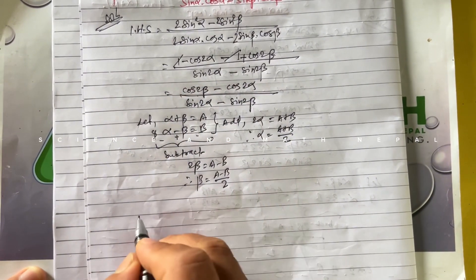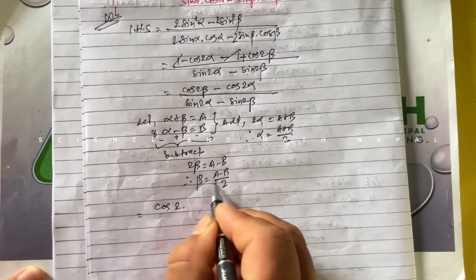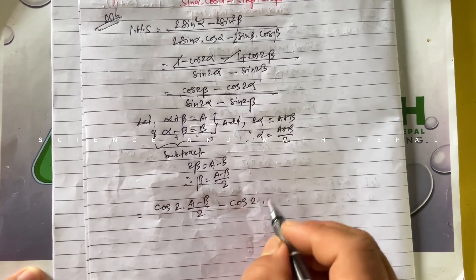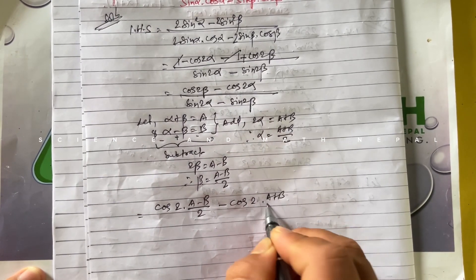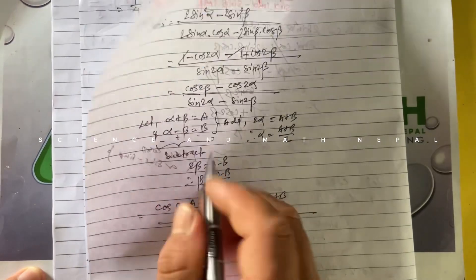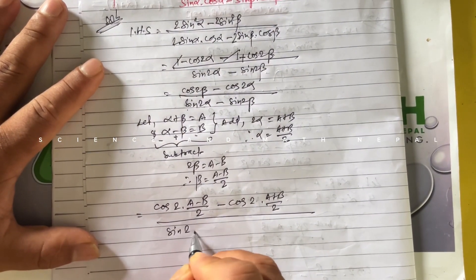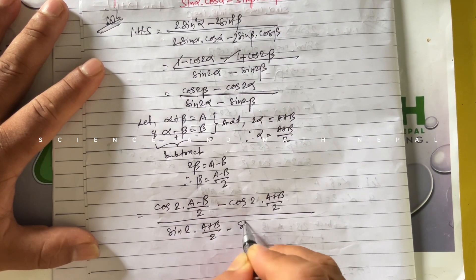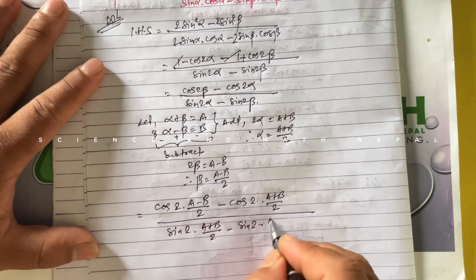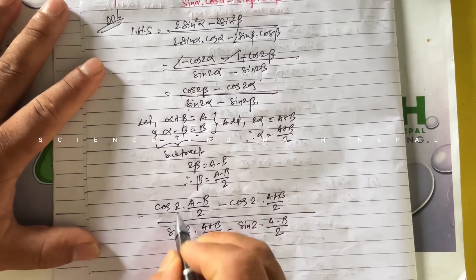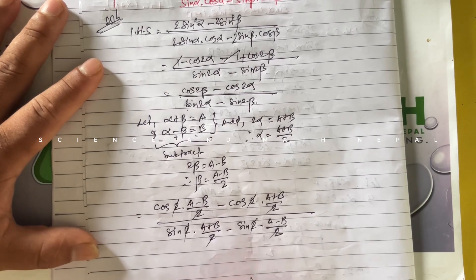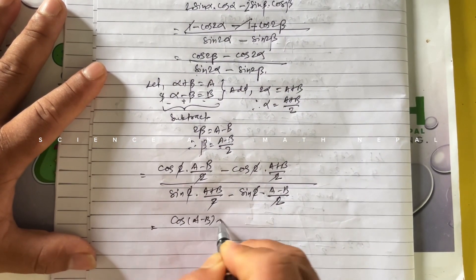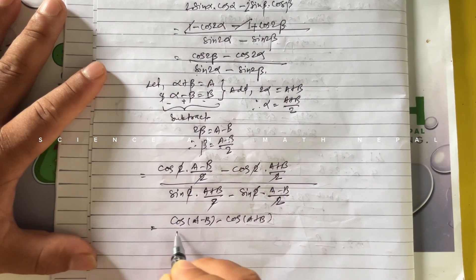Let's substitute the values of α and β into the expression. We get cos(2 × (a-b)/2) - cos(2 × (a+b)/2) in the numerator, which simplifies to cos(a - b) - cos(a + b). In the denominator we have sin(2 × (a+b)/2) - sin(2 × (a-b)/2), which gives sin(a + b) - sin(a - b).